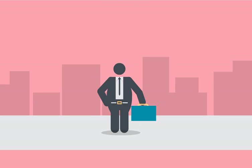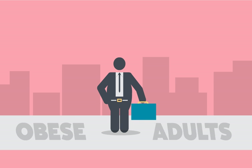Also, these risks don't end with childhood. Overweight children are more likely to become obese adults. So now we know some of the possible issues with being overweight or obese. Let's take a look at some common questions about weight and BMI.